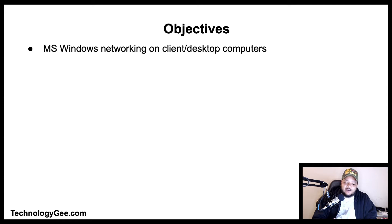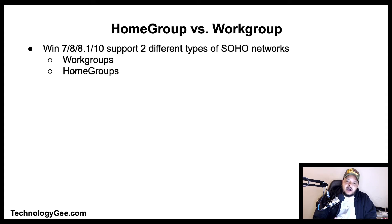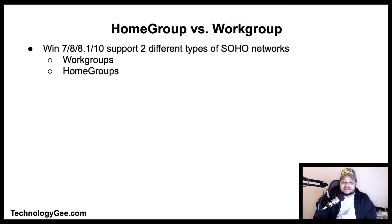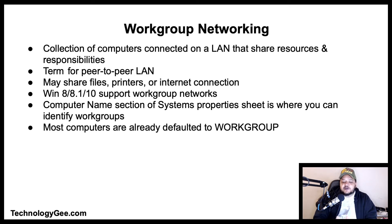Let's talk about home group versus work group. Windows 7, 8, 8.1, and 10 support two different types of SOHO networks: work groups and home groups. The following sections describe how they differ from each other.